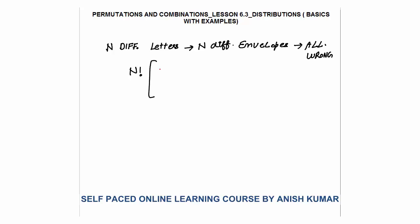There is a formula — this is the first formula I am going to tell you in permutation and combination. This formula says: n factorial times (1/2! − 1/3! + 1/4! − 1/5! and so on till 1/n!). This is the way to calculate the number of ways in which n different letters can be posted into n different envelopes such that all letters go to the wrong envelope.